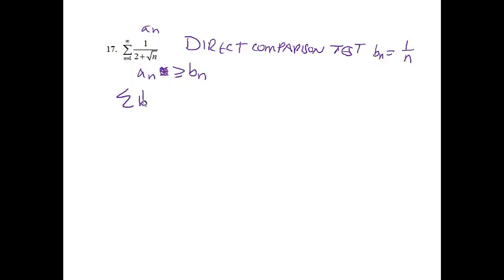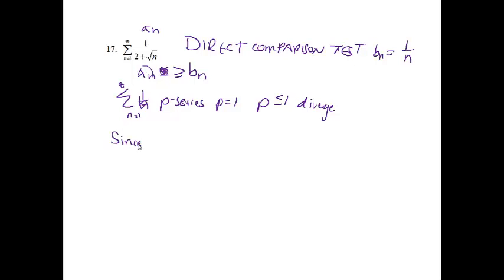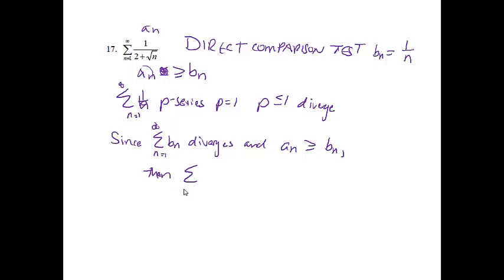We know the series of b sub n, which is 1 over n from n equals 1 to infinity. This is a p-series with p equal to 1, and if p is less than or equal to 1 the series will diverge. Since a sub n is even bigger than b sub n, a sub n also has to diverge. Since b sub n diverges and a sub n is even bigger than b sub n, then the series from n equals 1 to infinity of a sub n also diverges.